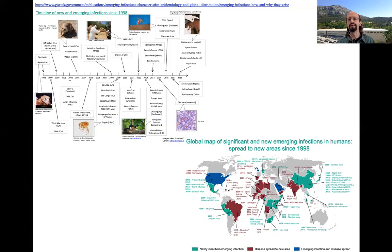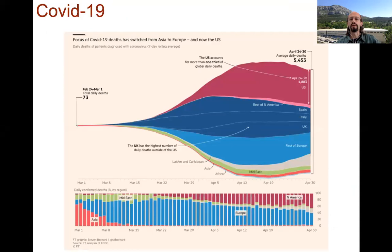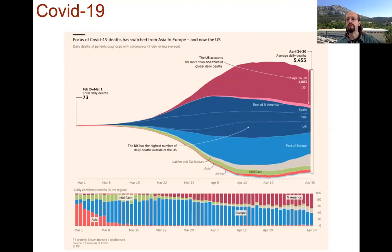COVID is something we haven't seen for a very long time, but the problem of infectious diseases has been there for a long time and many people have worked on it. COVID-19 has brought the world to a halt in a way we have never seen before. What started as a disease mainly damaging China and Asia is now hurting the Americas and Europe — it has become a truly worldwide issue.